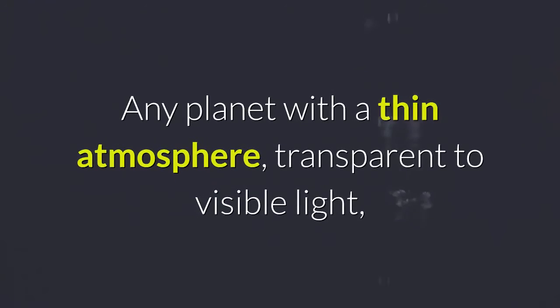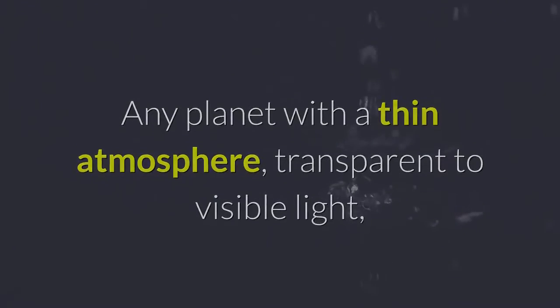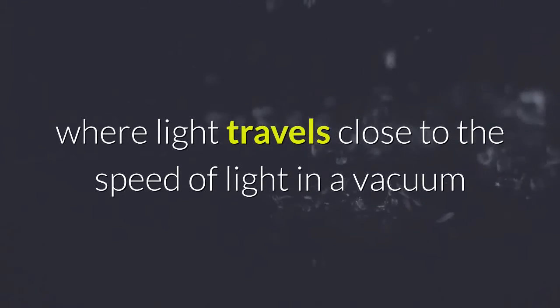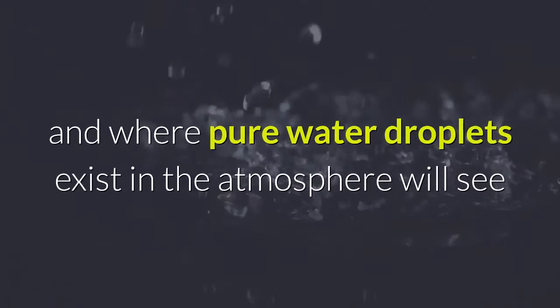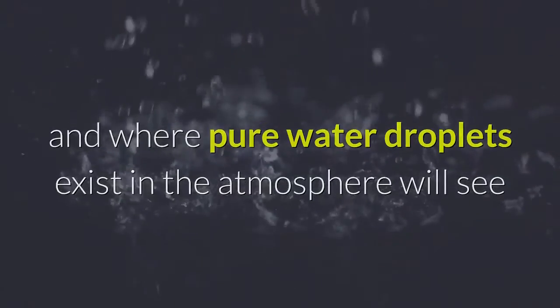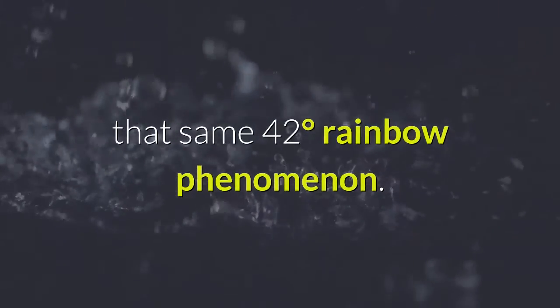Any planet with a thin atmosphere, transparent to visible light, where light travels close to the speed of light in a vacuum and where pure water droplets exist in the atmosphere will see that same 42 degrees rainbow phenomenon.